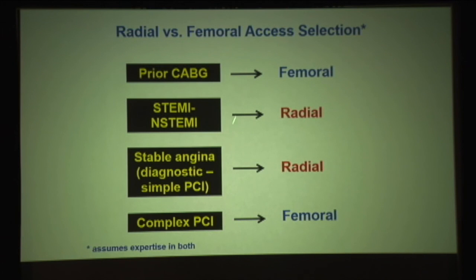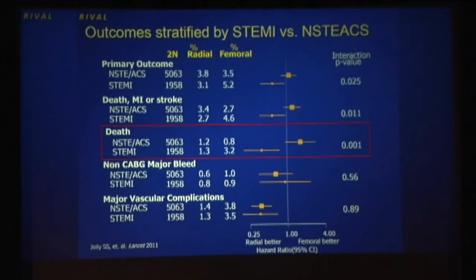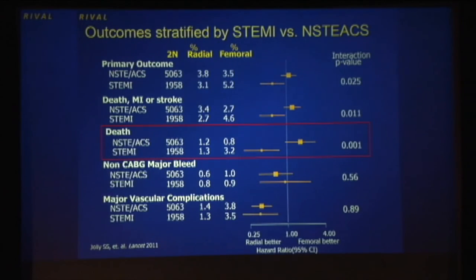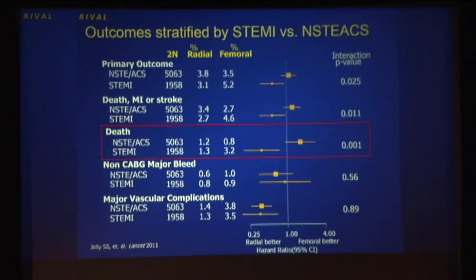Radial does have a role — I'll give you that. ACS and STEMI do have a role for radial. But for previous bypass patients and complex PCI, femoral is clearly the way to go. Also, looking at the data: RIVAL was negative — you didn't hear that very clearly. RIVAL showed STEMI benefit for radial. Then Matrix showed it doesn't work for STEMI but works for non-STEMI, where RIVAL didn't show benefit. Consistency is an important thing.